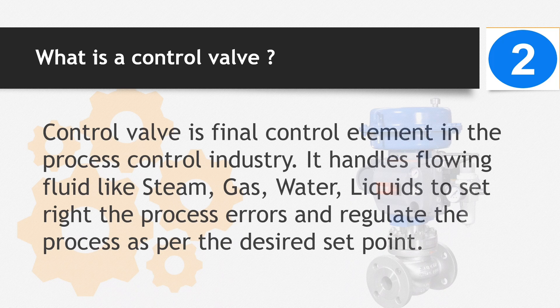Number 2: What is a control valve? Control valve is the final control element in the process control industry. It handles flowing fluids like steam, gas, water, and liquids to set right the process errors and regulate the process as per the desired set point.